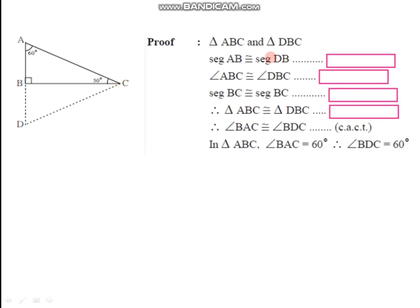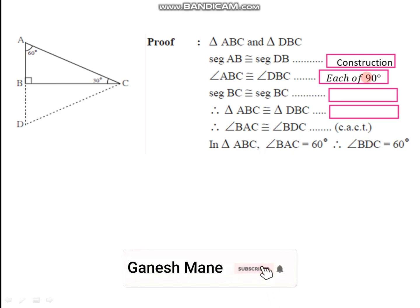By doing this construction, we get two triangles: triangle ABC and triangle DBC. We are going to prove these two triangles congruent in the form of an activity. The first component is segment AB is congruent to segment DB by construction. The measure of angle ABC equals the measure of angle DBC, each being 90 degrees — angle ABC is given as a right angle, and since ABC and DBC form a linear pair, DBC must also be 90 degrees.